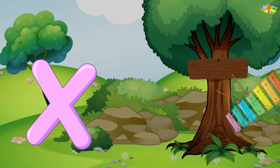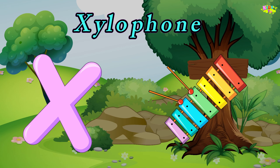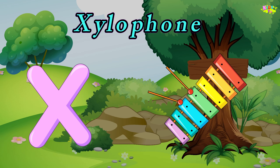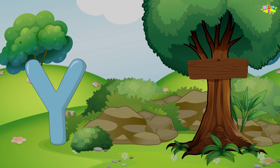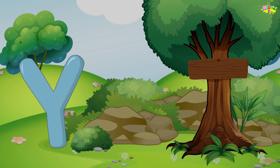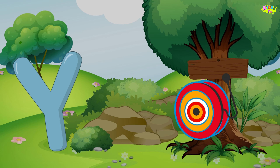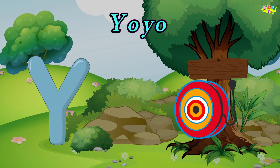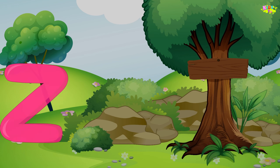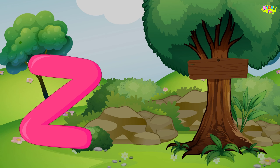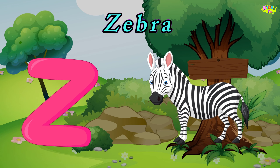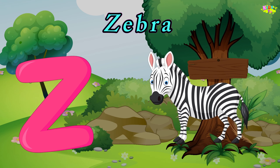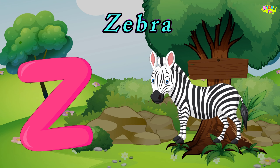X is for xylophone. X, x, xylophone. X, xylophone. Y is for yo-yo. Ye, ye, yo-yo. Ye, ye, yo-yo. Y, yo-yo. Z is for zebra. Z, z, zebra. Z, z, zebra. Z, zebra.